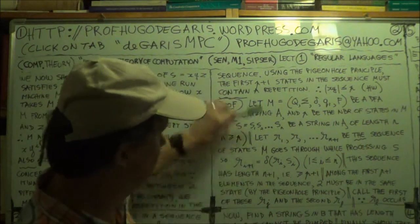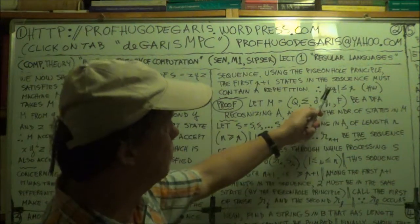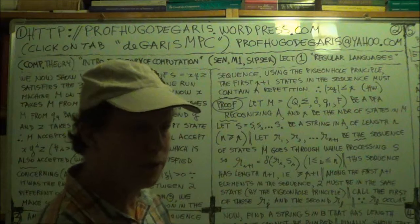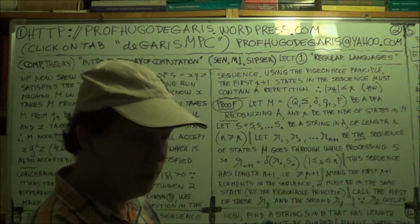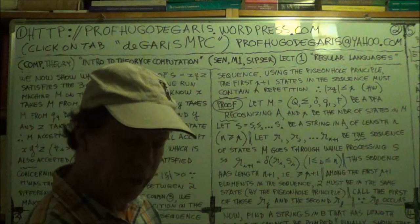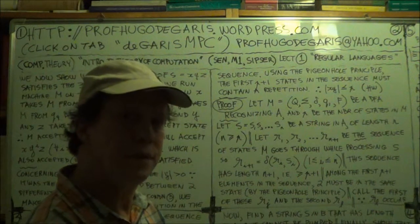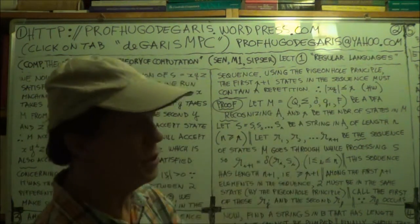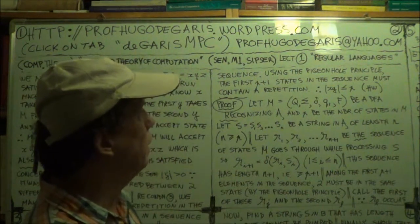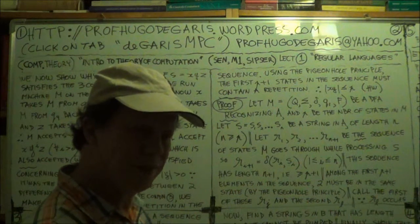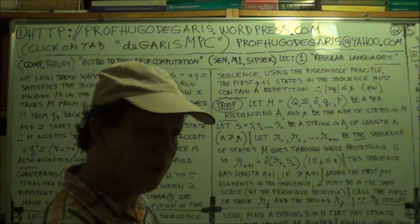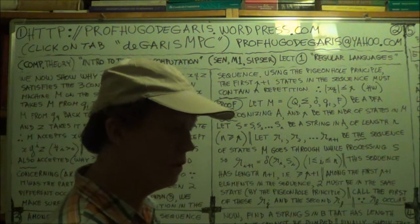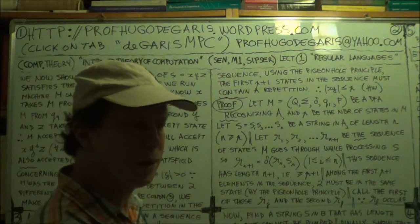All right, now the formal proof. We've now found the three conditions. We've found that this reasoning, where you assume that the pumping length is equal to the number of states in your machine, and from that we've found these three conditions, with a few question marks along the way.